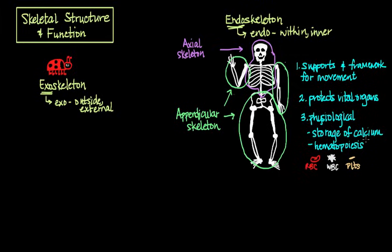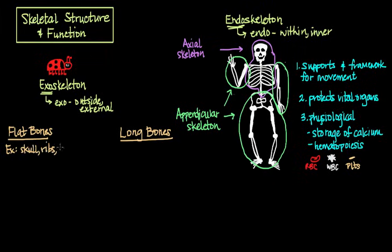Another classification system for the bones in our skeleton is the difference between flat bones and long bones. What are flat bones? Some examples of flat bones are the bones that make up your skull, the different bones that make up your ribs, and the bones in your pelvis.